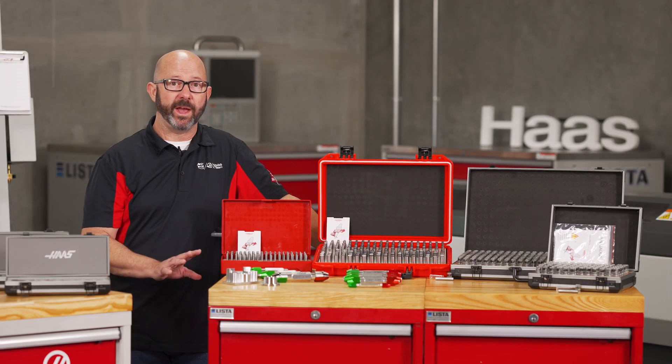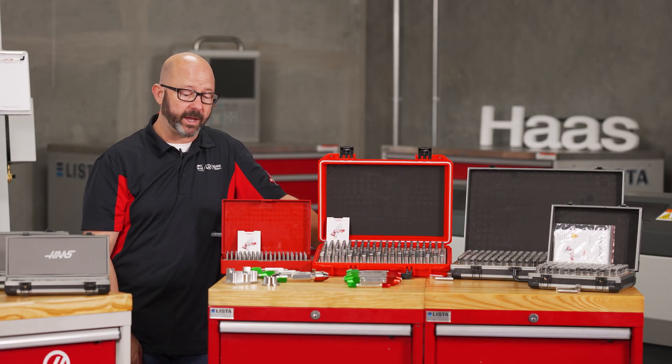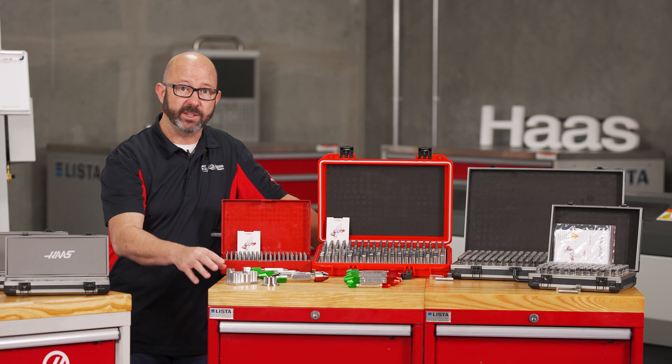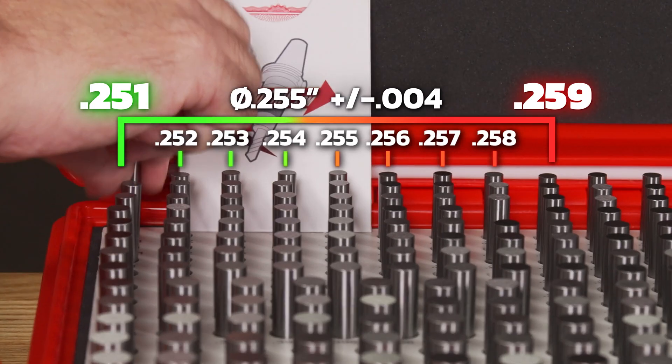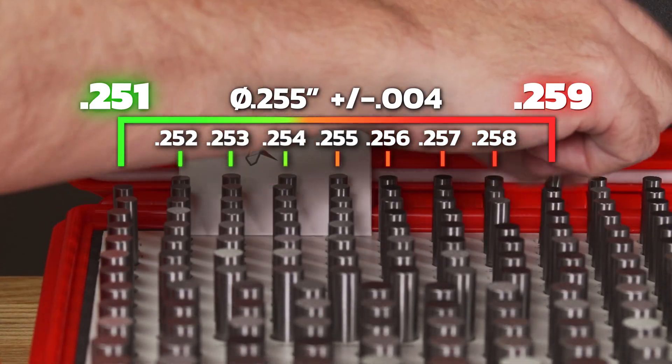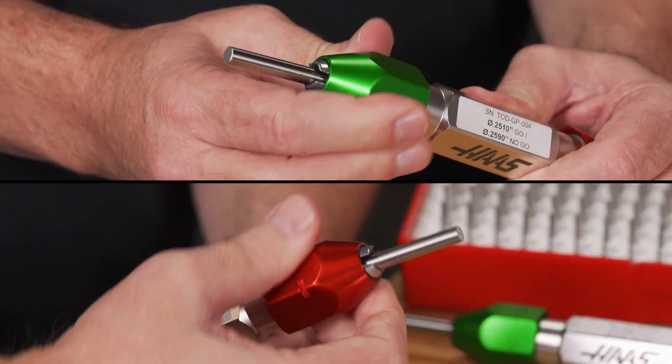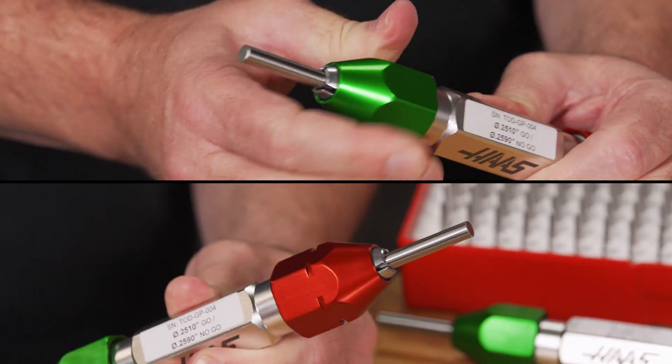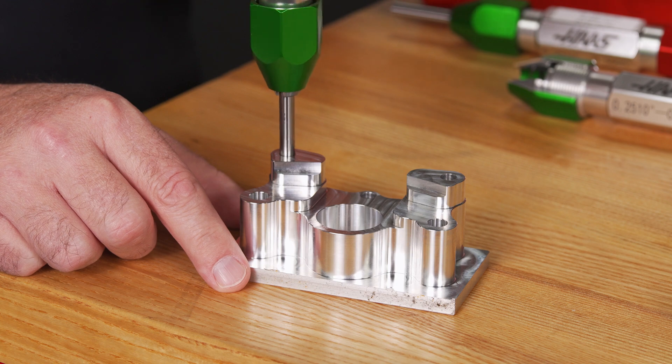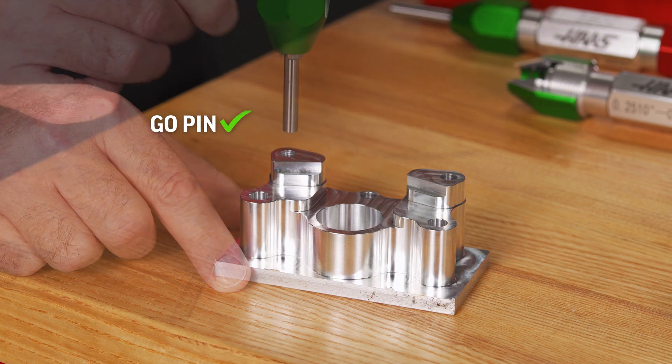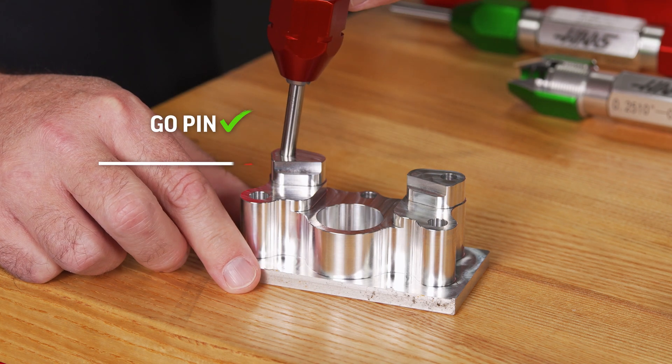Now, that's pretty quick, but if we just want to quickly find out if a feature is good or not within spec, we can pull pins at both the low end and the high end of our tolerance and load them into a go, no go handle. If the go pin fits and the no go pin does not fit, then we know that we have a good part.